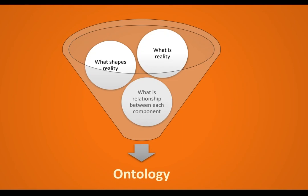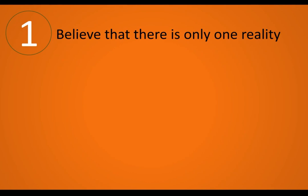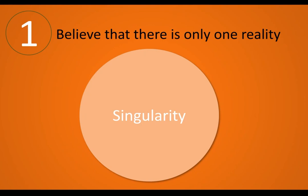Ontology can be understood based on these three concepts, but to make it simple, ontology is telling us about what is reality. There are many beliefs available for ontology, but here I am taking only three major beliefs. The first belief is that there is only one reality — it is called singularity. It means there is only one universal set of solutions to any problem, only one universal truth, and this reality exists independent of how people perceive it.